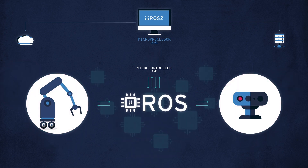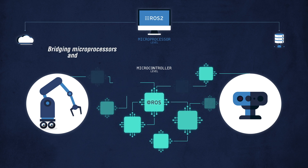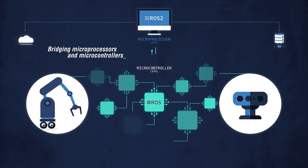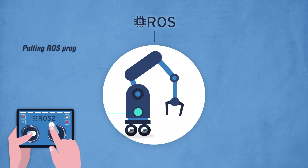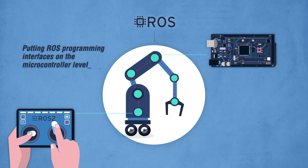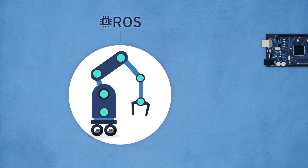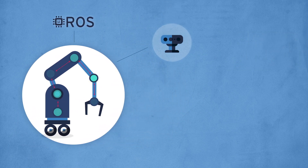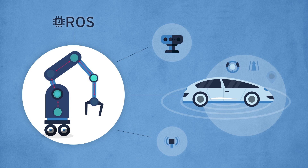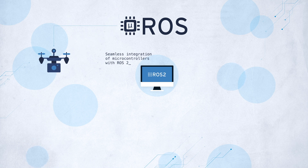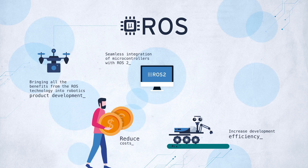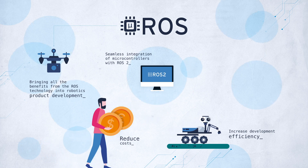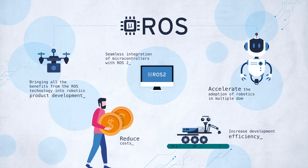Micro ROS is the robotic framework that bridges the gap between resource-constrained and larger processing units and robotic applications. In addition, Micro ROS brings the ROS programming interface to these resource-constrained devices. With Micro ROS, microcontrollers can be integrated seamlessly into ROS2-based systems and will no longer be inflexible black boxes. The combination of ROS2 and Micro ROS results in a full-stack robotic framework that lowers market entry barriers by saving costs and accelerating robot development.